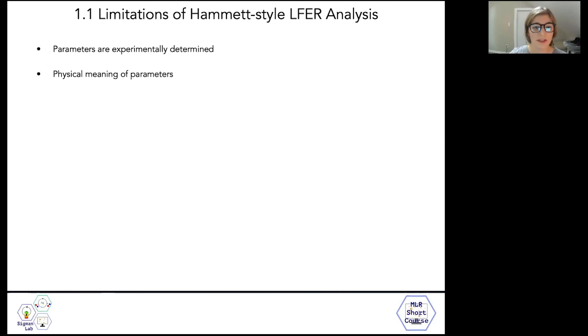But the two limitations that ultimately led to the Sigman group's modern statistical modeling strategy is that only one substituent effect could be probed at a time, and that these linear free energy relationships didn't necessarily predict substituents that would make reactions work better. About a decade ago, people in the group began pondering how linear free energy relationships might be constructed so that more than one substituent could be tested at once.